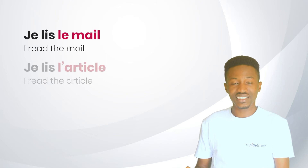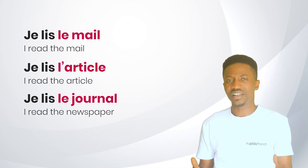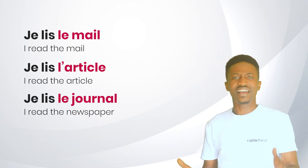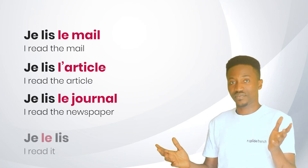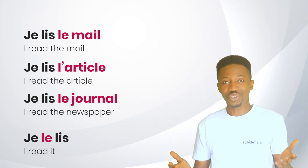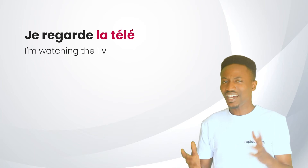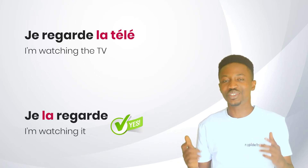More examples: je lis le mail, je lis l'article, je lis le journal — I'm reading the mail / the article / the newspaper. Mail, article, journal are all direct objects. If someone asks tu lis le mail? and you want to say yes, I'm reading it, replace le mail with le and place it before the verb: oui, je le lis. Practice: je regarde la télé — I'm watching TV. How do you say I'm watching it? Je la regarde, because télé is feminine.